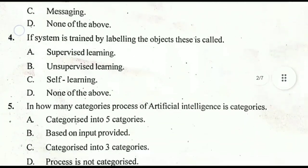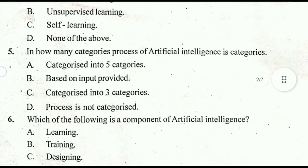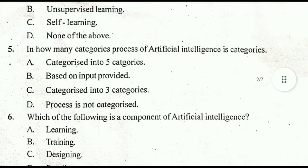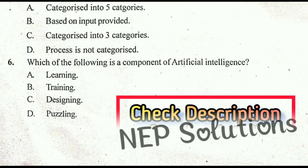Fourth question: if a system is trained by labeling the objects, this is called option A, supervised learning — that is the correct answer. Next, fifth question: in how many categories is the process of artificial intelligence categorized? The correct answer is three categories.